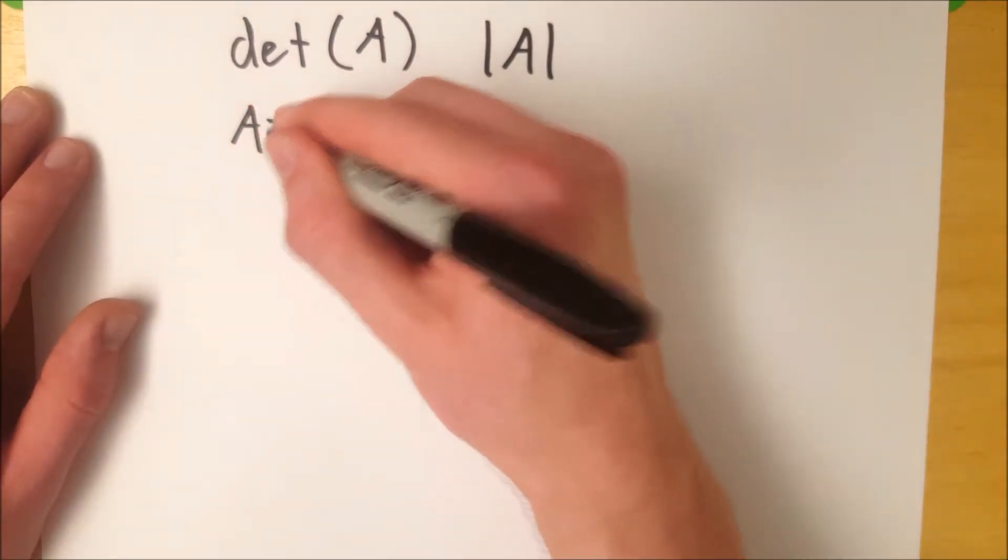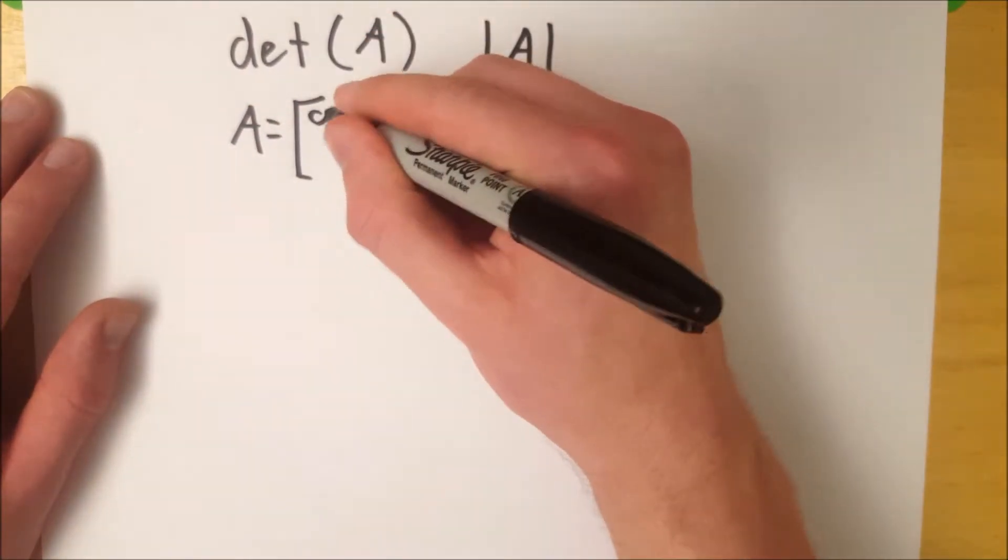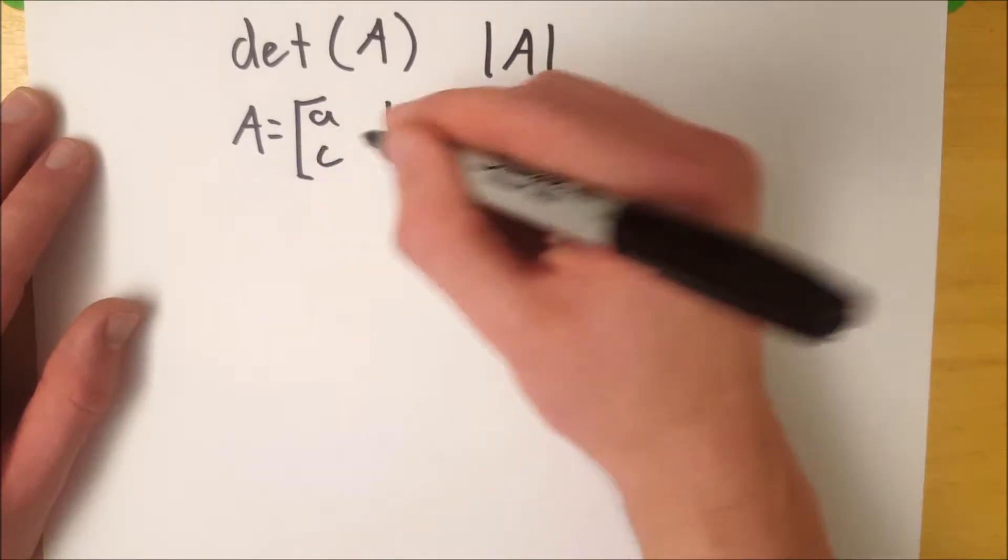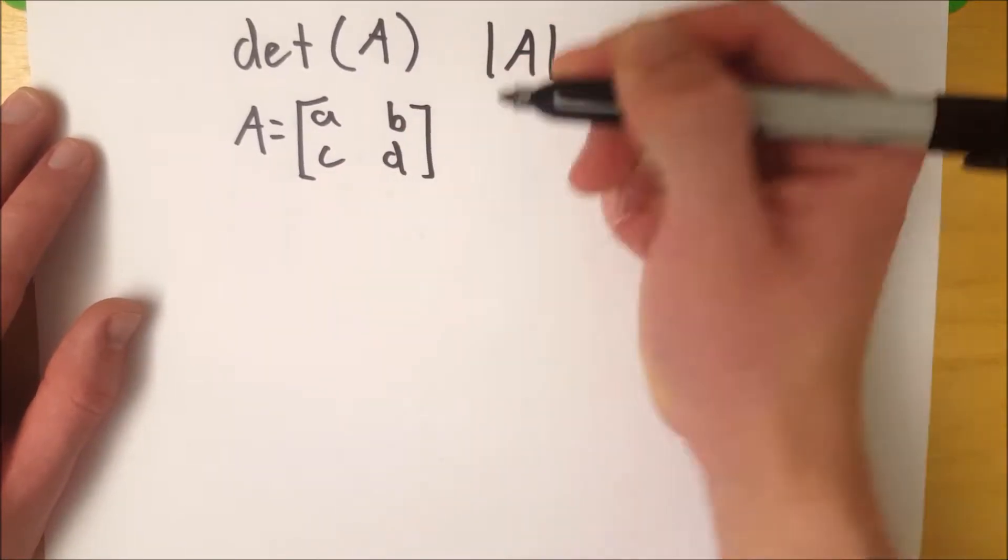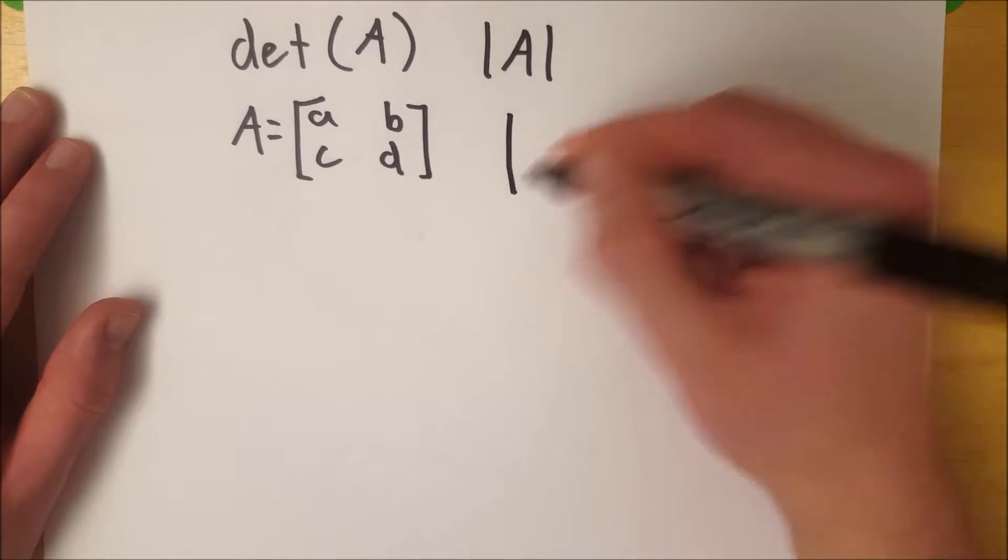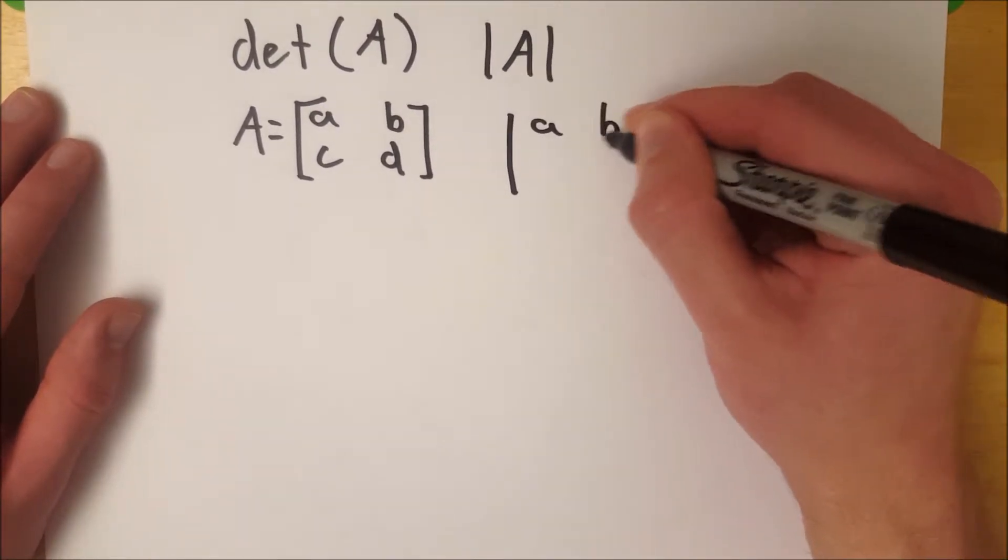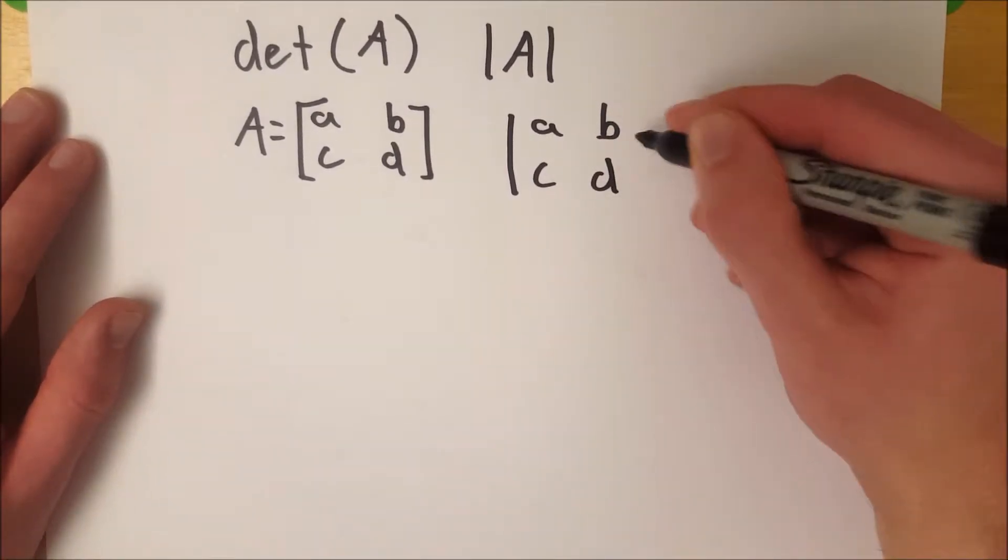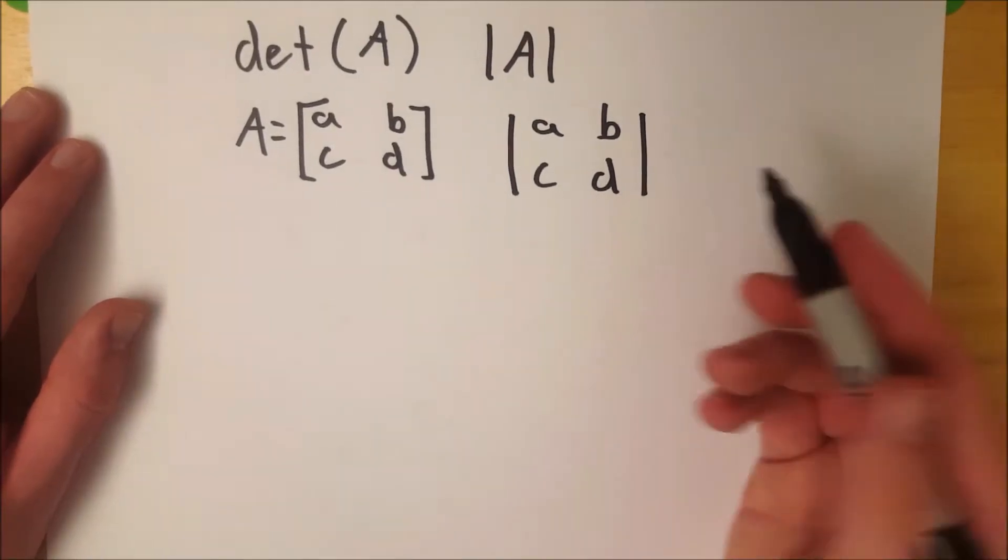Or, let's say that A equals the matrix that has entries A, B, C, and D. We could also write it like this, with the bars around the actual entries of the matrix, and that would also be the determinant of A.